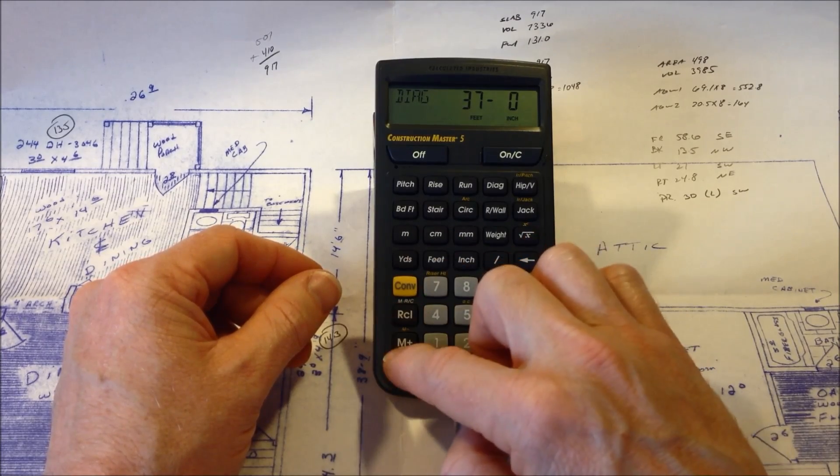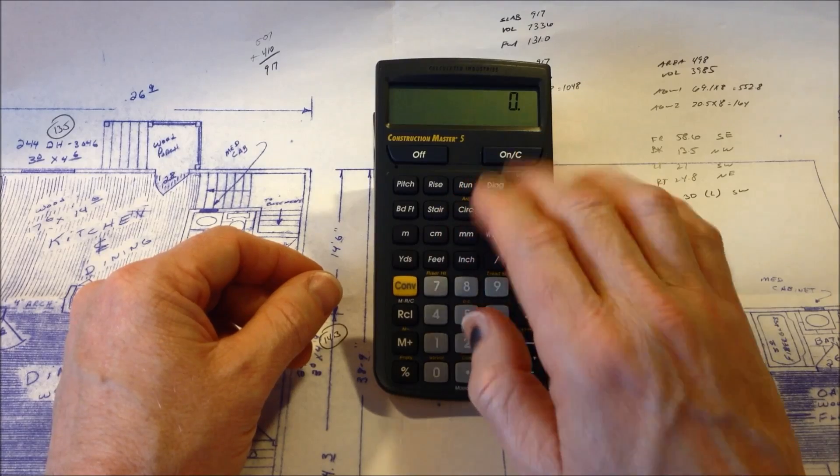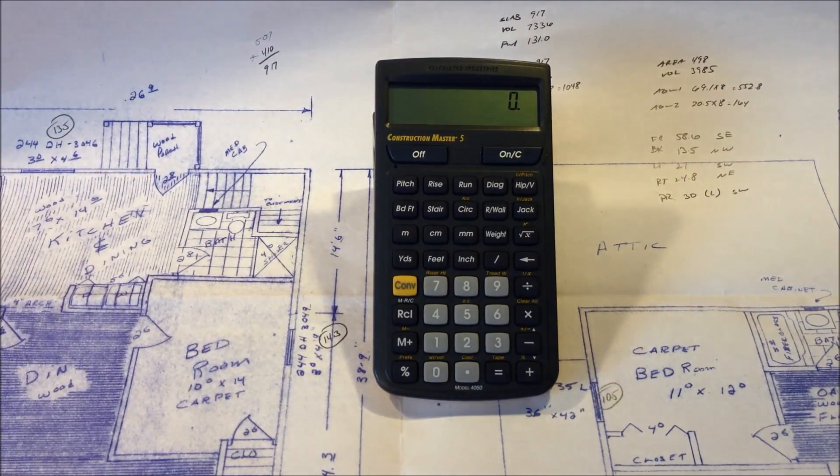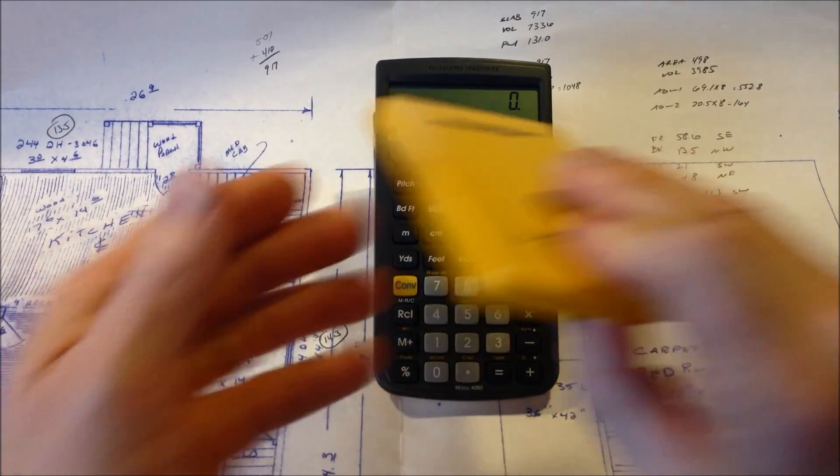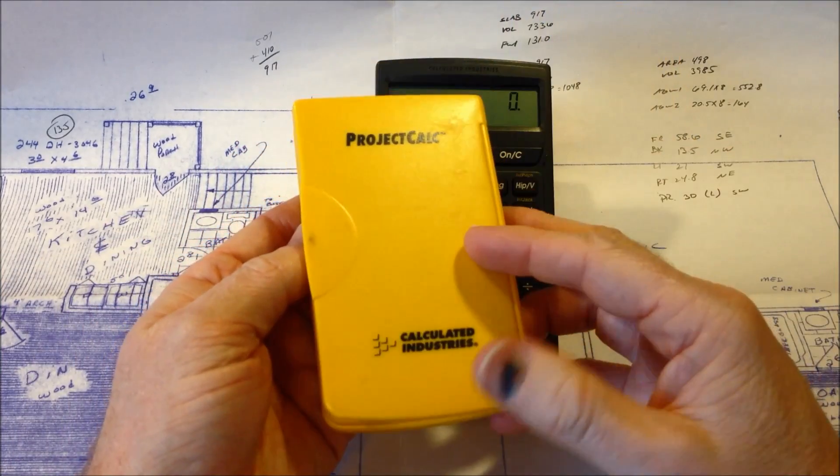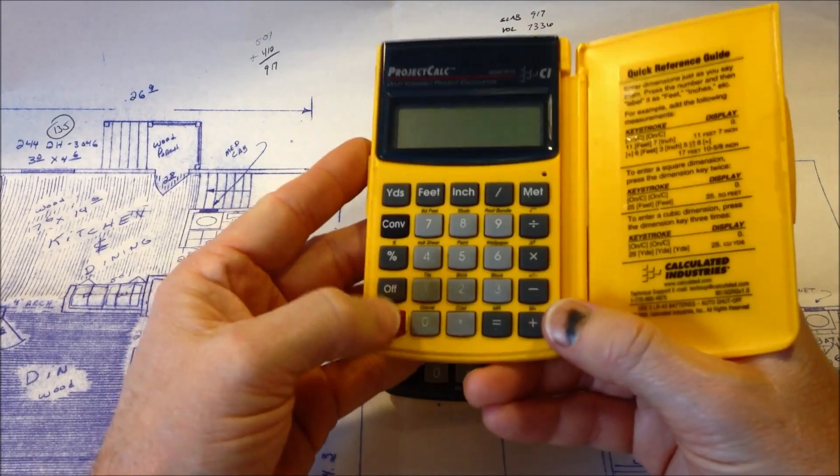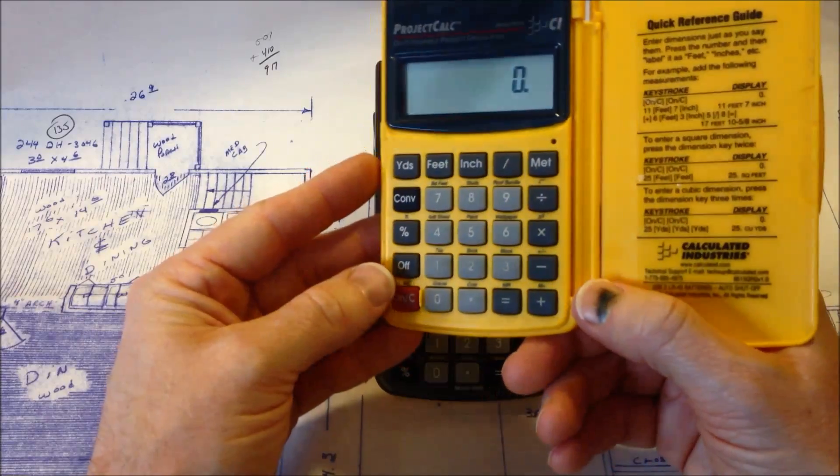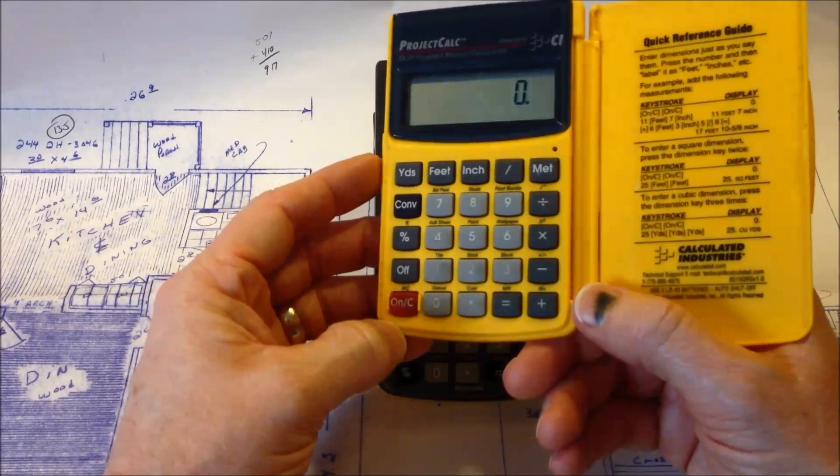Now you might notice that my finger keeps going down here to hit clear instead of up here at the top. And that's because the old version of this calculator, which is the Project Calc, also from Calculated Industries, had the clear button down in the bottom left. And I've used this calculator every day for seven years, so I'm used to the clear button being down at the bottom.